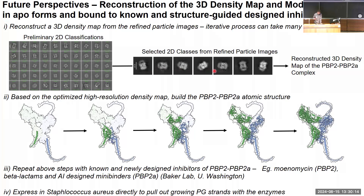We can use this map as a guide to help solve the structure of PBP2-PBP2A. Further steps include solving the structure in complex with different inhibitors, notably an AI-designed inhibitor from the Baker Lab at the University of Washington, and expressing this complex in Staph aureus, its native host, to pull out growing peptidoglycan strands and learn more about its specific interactions. Please come see poster number five. Thank you.